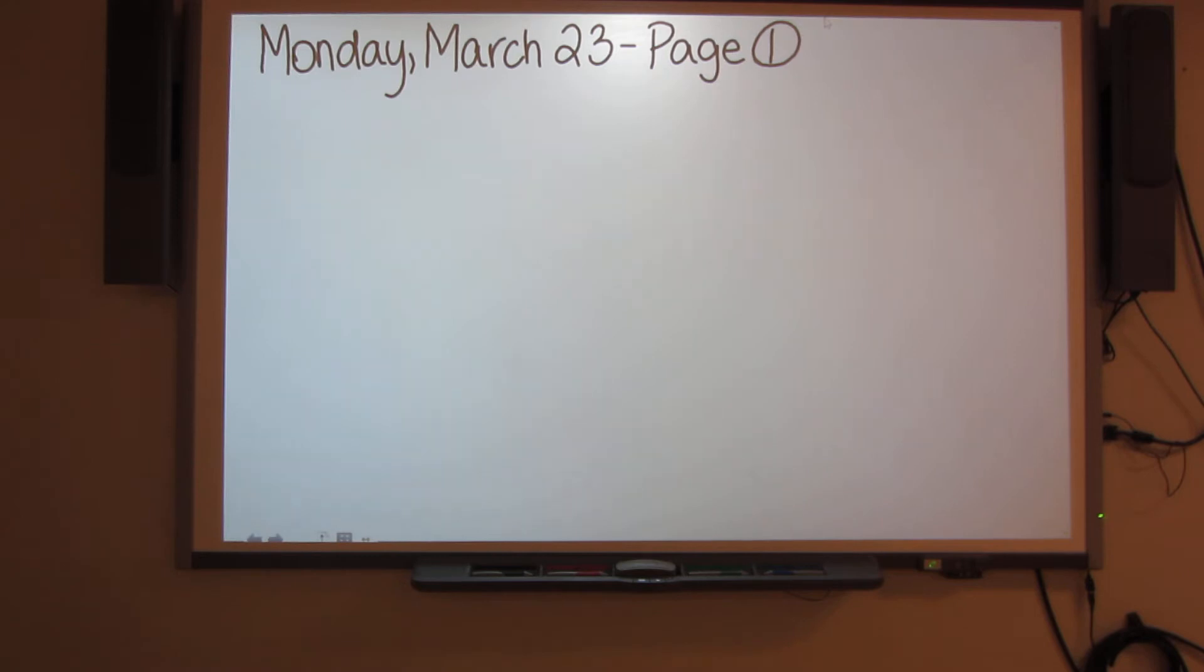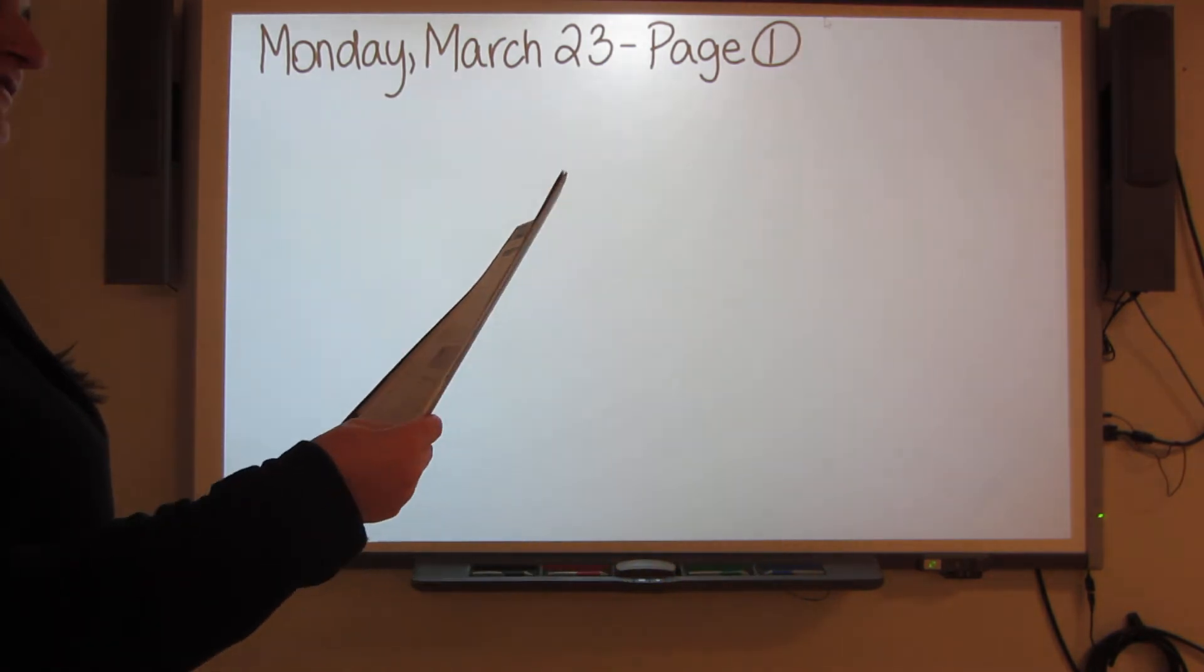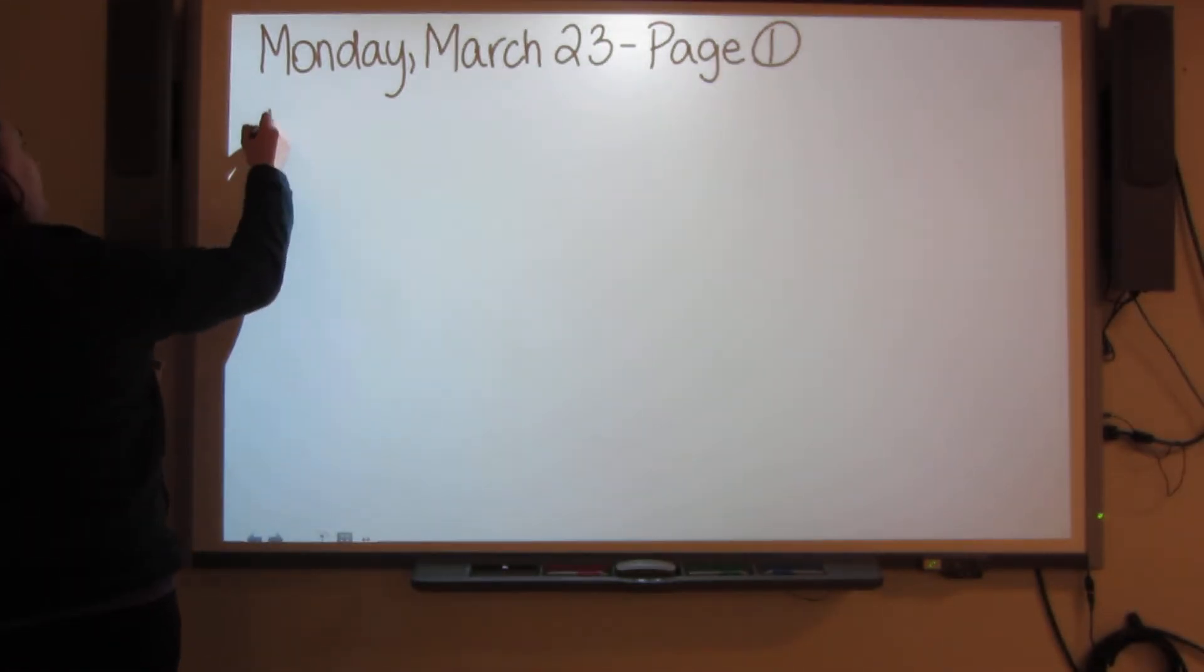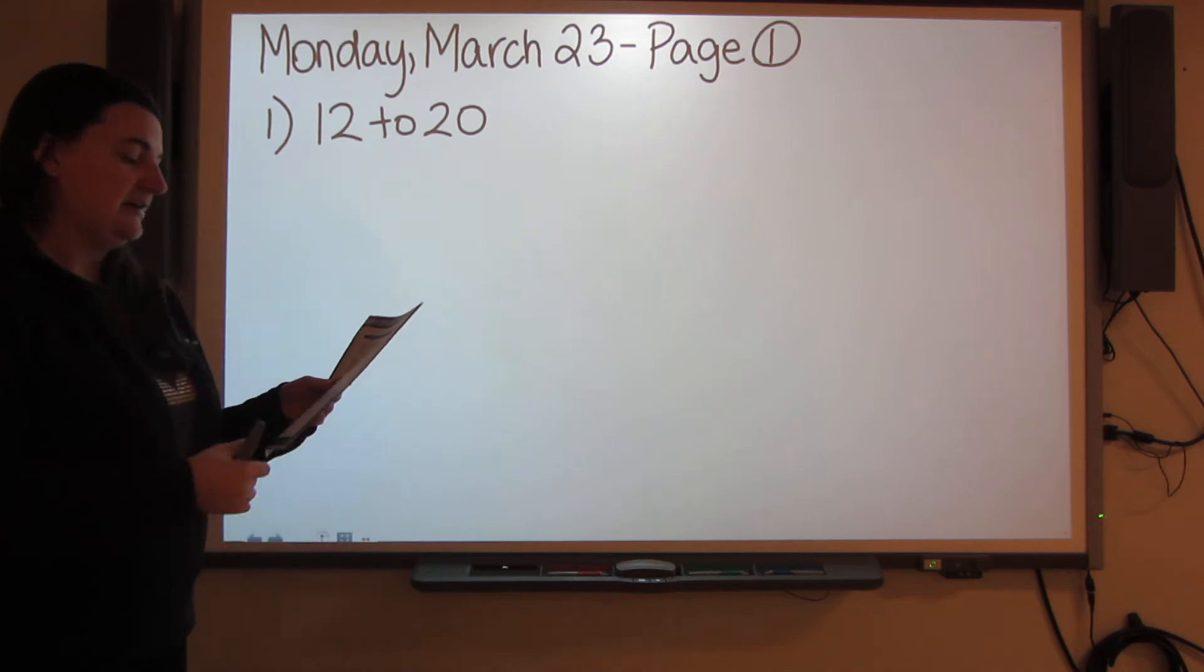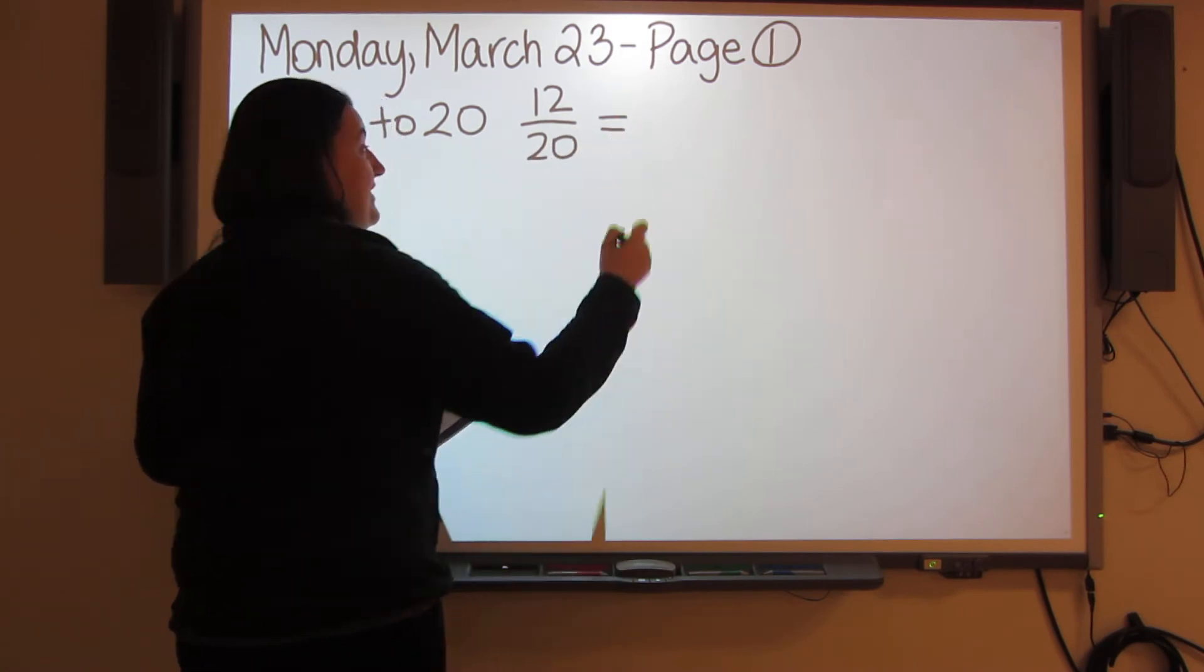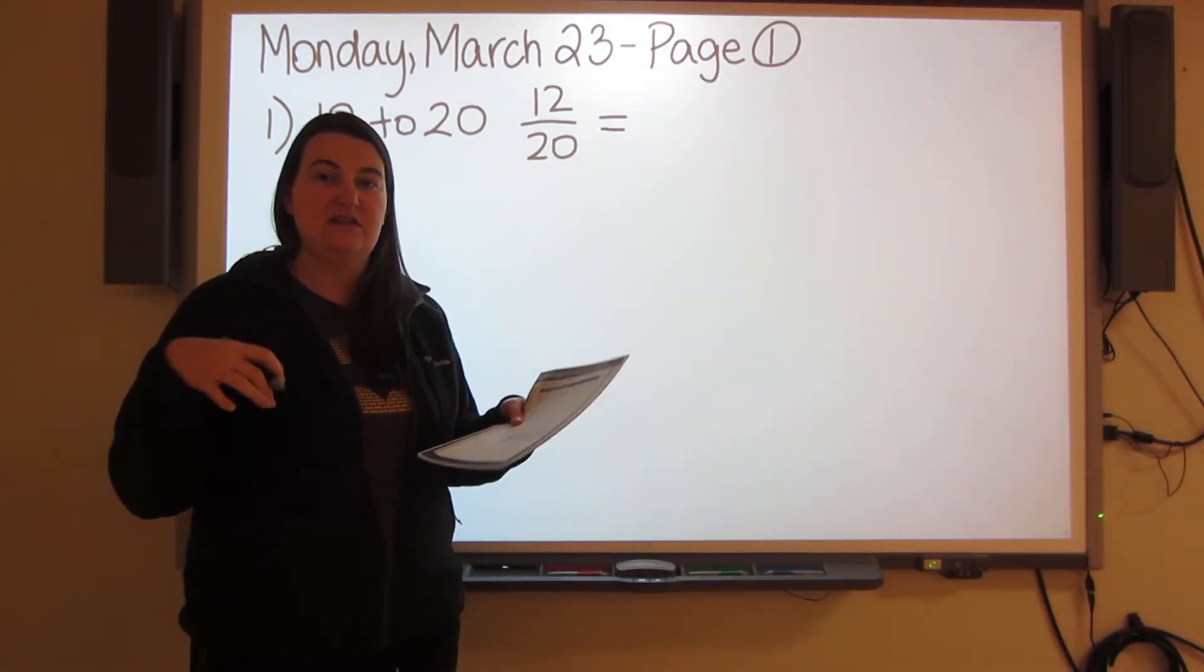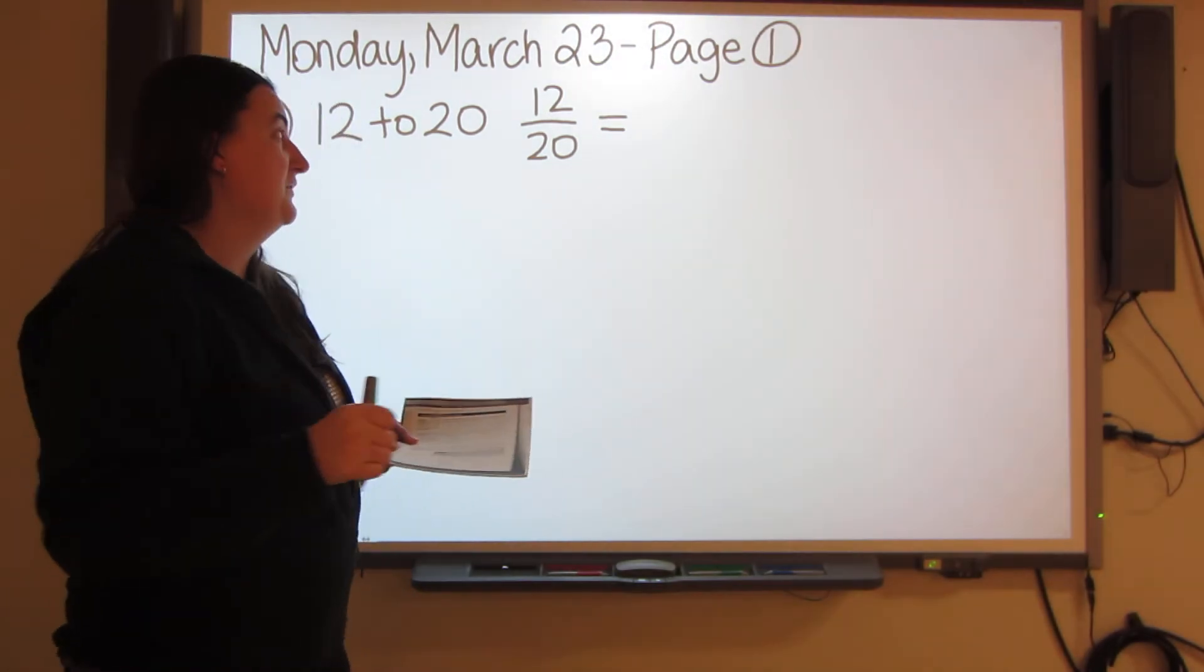If you take a look at page one, it says write each ratio as a fraction in simplest form. Remember simplest form is just a fancy way to say lowest terms - they mean the same thing. If you take a look at number one, it says you've got 12 to 20. So you have to figure out what number can I divide into 12 and 20 to make it lowest terms, to reduce it to the smallest fraction it can be. Use your multiplication chart.